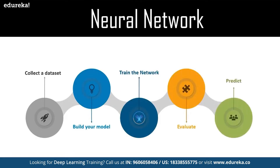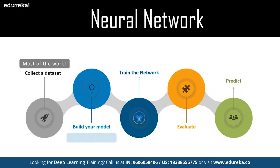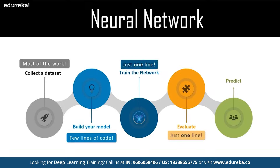Building a neural network with TensorFlow cannot get any simpler. A typical machine learning lifecycle includes steps like data collection, building the model, training the network, evaluating the model, and predicting the outcome. In TensorFlow, most of the time is spent on data collection. Building your model requires only a few lines of code, training the network is a single line, evaluating the model is a single line, and predicting the output is also a single line of code — which is why TensorFlow remains at the top compared to other competitors.